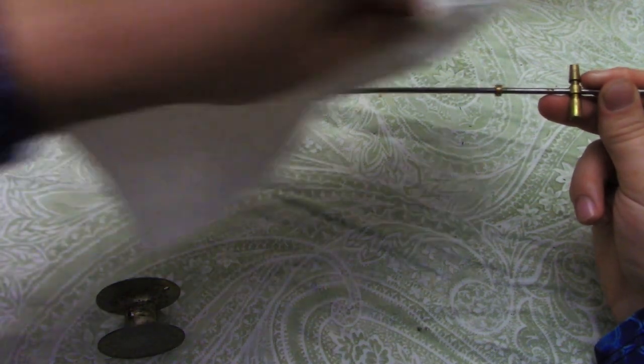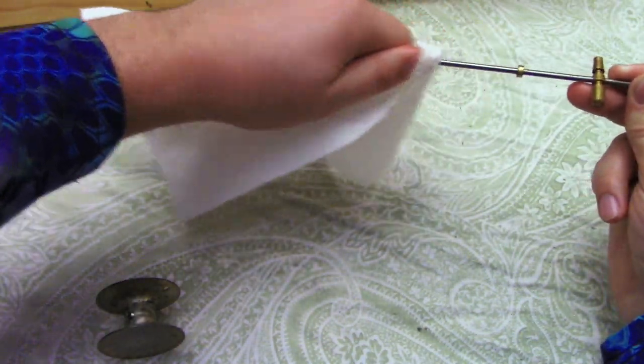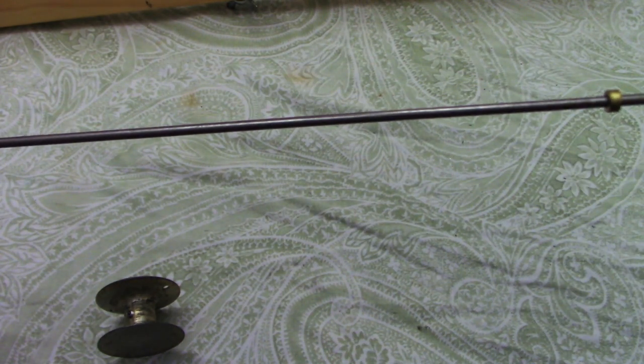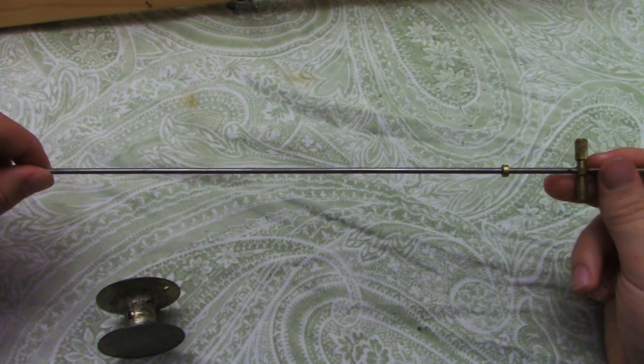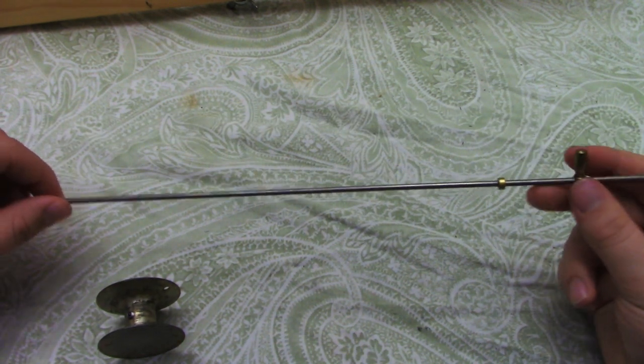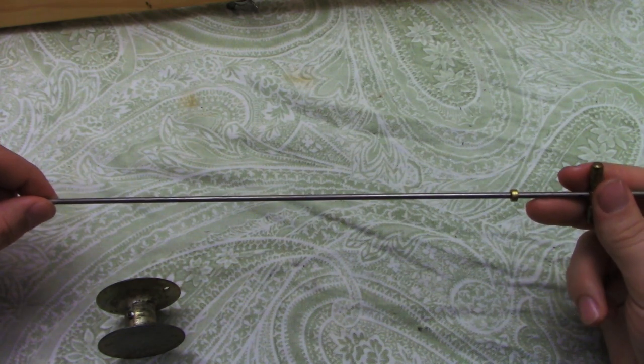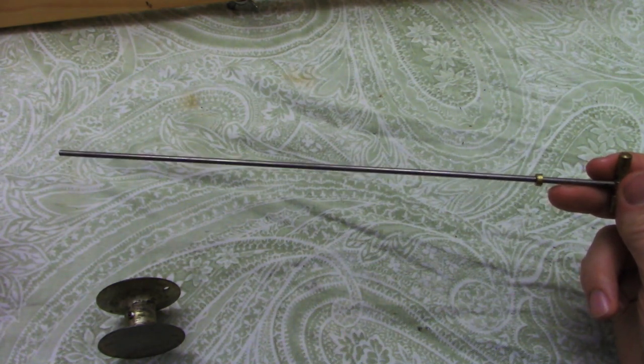With the spindle out again I'm going to take the paper towel and wipe down the old grease off of here. On a careful inspection of my spindle there does not appear to be any corrosion so I will not need to use steel wool in the event that you do. I would just recommend wiping it across with steel wool to remove any of that corrosion.